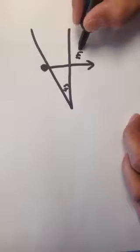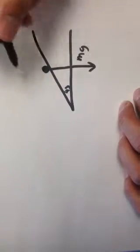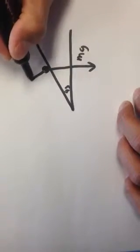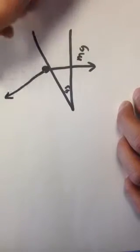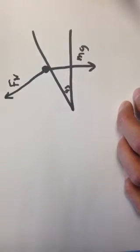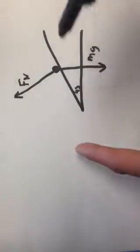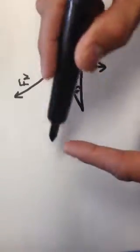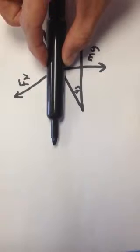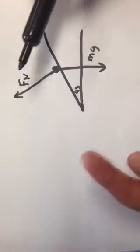Gravity is obviously pulling the scooter straight down, so the scooter's mass is M and gravity is equal to M times G, G being 9.8 — it's just easier to write G. The surface of this banked corner is going to exert a normal force in this direction; I'll call that FN. FN is perpendicular to the surface. Now for the scooter to go around a corner it's going to have to accelerate towards the center of the turn radius as it curves around.